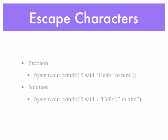In the example, to print 'I said hello to him' with hello in quotation marks, put a backslash before the quotation mark that comes before the H, and a backslash before the quotation mark that comes after the O. This will print 'I said "hello" to him' to the screen.